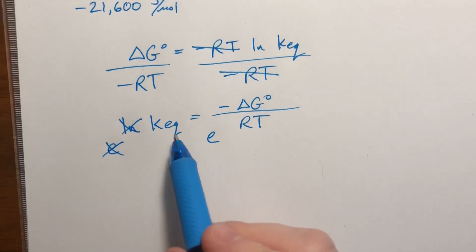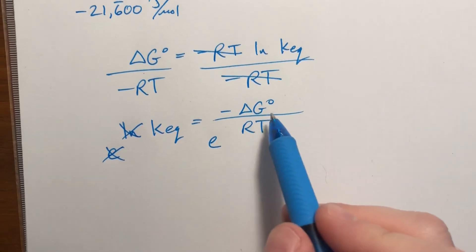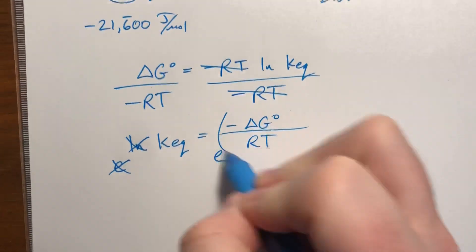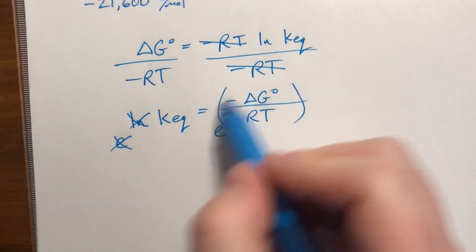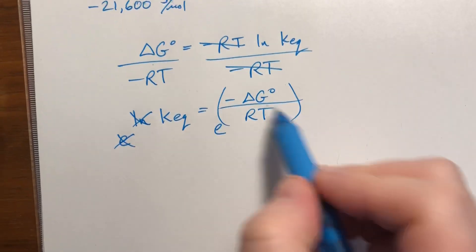So Keq is equal to E to the negative delta G divided by RT. All of this is an exponent. It doesn't have to be in parentheses, but I'm just trying to make sure it's obvious that all of this is an exponent.